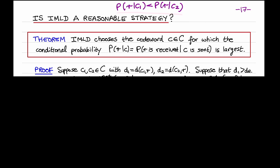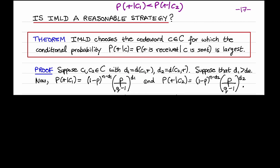So let's compute these two conditional probabilities. The probability that R is received given that C1 is transmitted is given by this expression. Note that R and C1 agree in N minus D1 positions, so the probability that the symbols in these N minus D1 positions are transmitted correctly is (1 − P)^(N − D1), where P is the symbol error probability. Also, R and C1 differ in D1 positions, so the probability that those D1 symbols are transmitted incorrectly to particular symbols in the alphabet is (P/(Q−1))^D1.